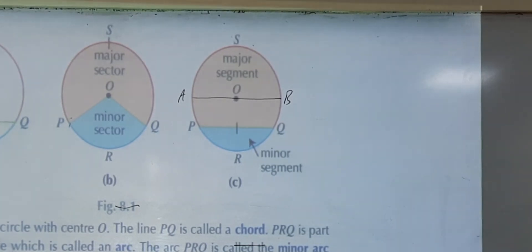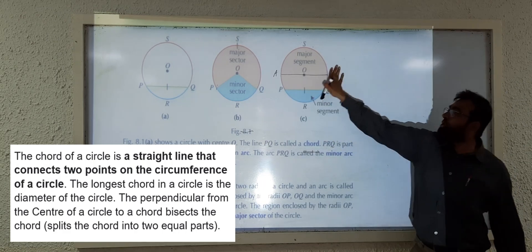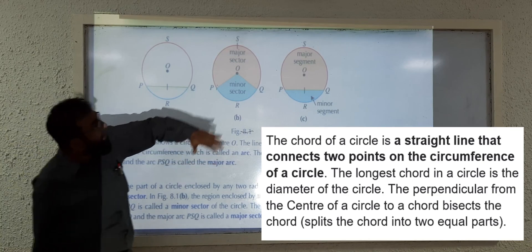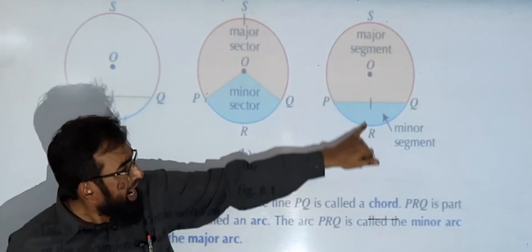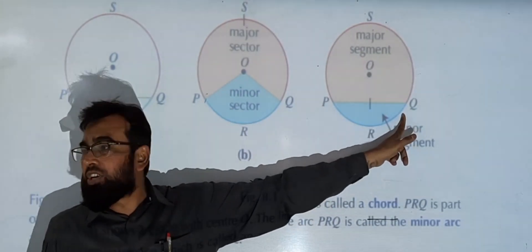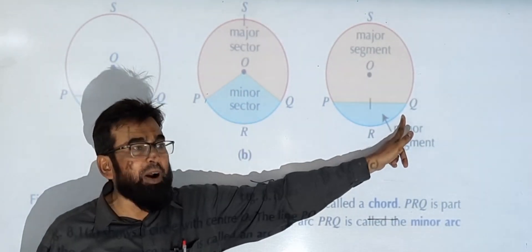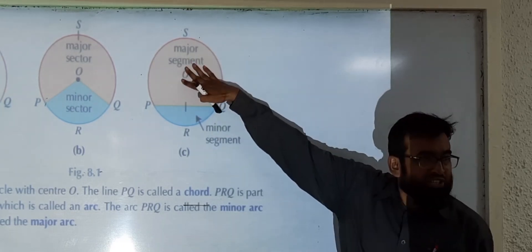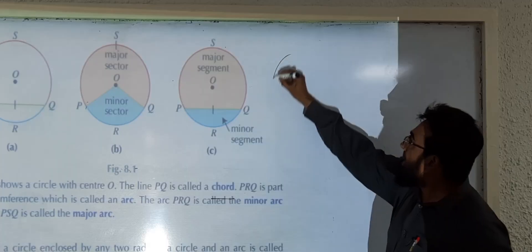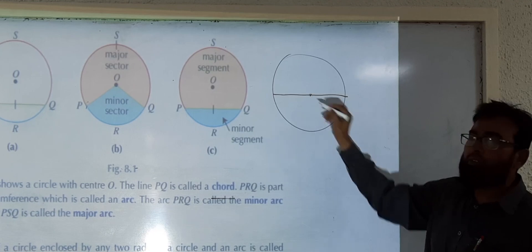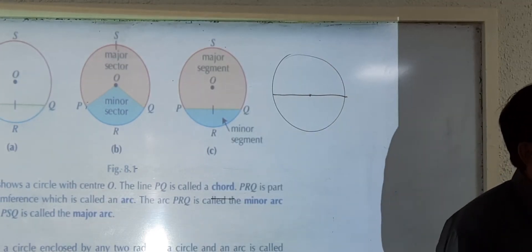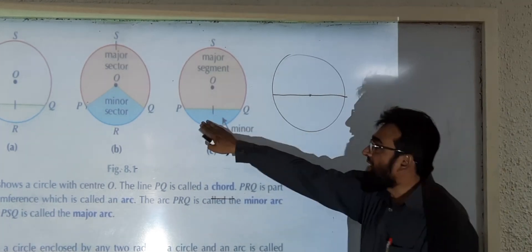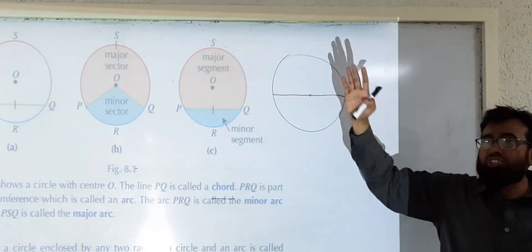This chord is dividing the circle into two parts — one is the major segment and the other is the minor segment. These are unequal parts. However, if the chord is a diameter, then it divides the circle into two equal parts, and both segments are equal segments.